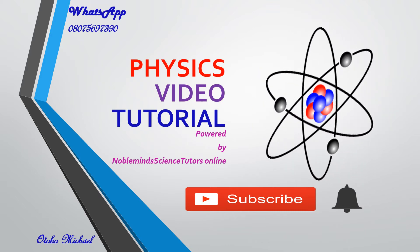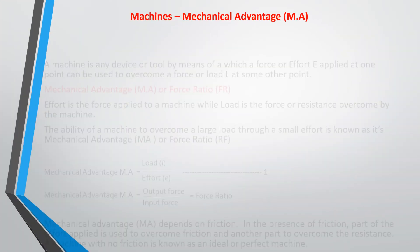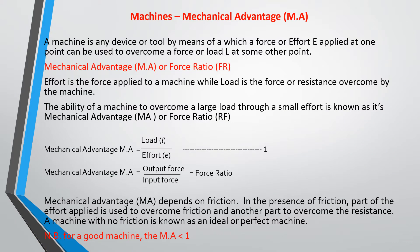So what are machines? Machines are equipment that you use every day. The simplest one you use at home is your knife. You use your knife to cut and do many things in your kitchen. Your knife is a machine because when you apply an effort on one side, it will have an effect on the load.